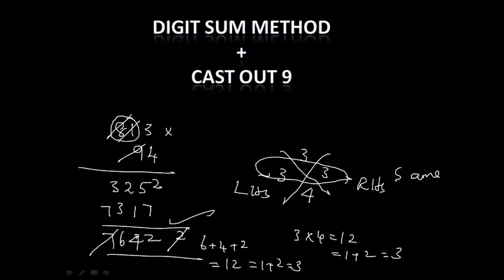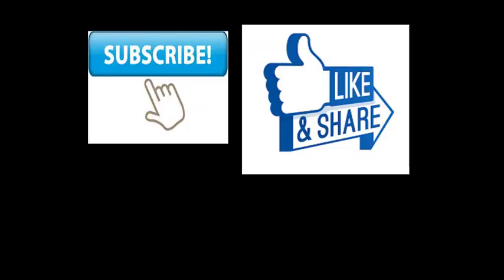So this is how the multiplication can be verified very quickly by using digit sum method along with cast out 9 rule. Thank you very much for watching this video.